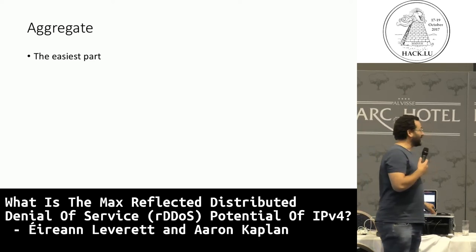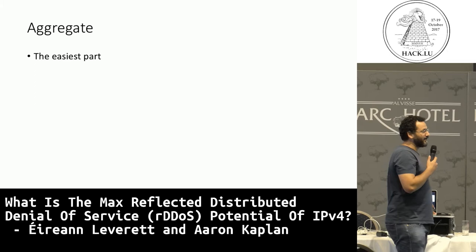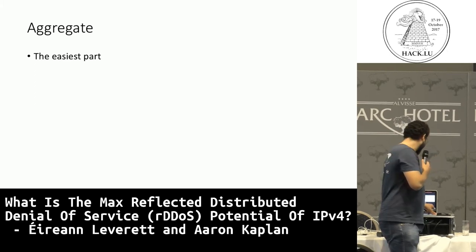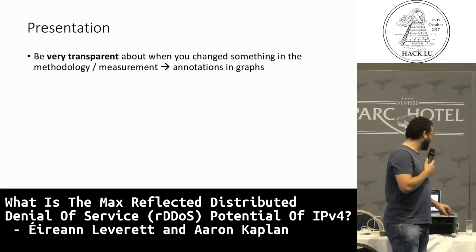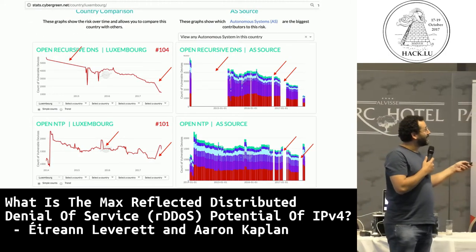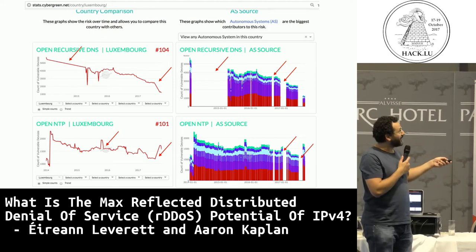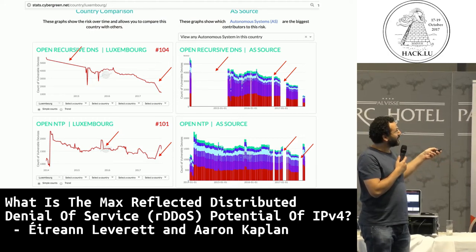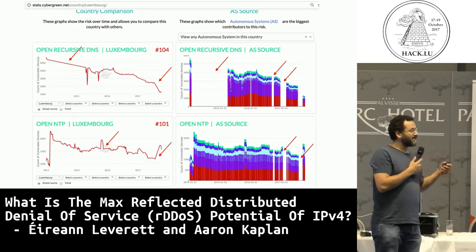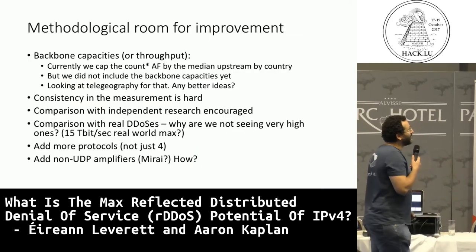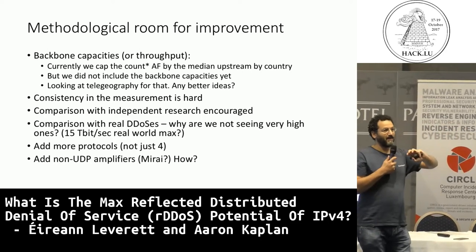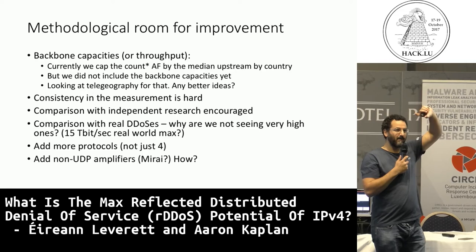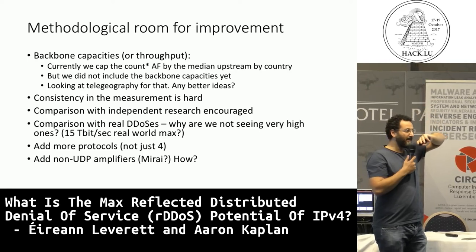Upstream bandwidth: the best data we got our hands on was MLab. Speedtest.net is used a lot but they sell their data. For the presentation layer, it's really important to point out exactly where you made omissions - for example where no data came in and got interpolated, or where there was a change in scanning methodology. Be transparent about these. What we have not yet done is check for bottlenecks in the backbone - for example between Holland and England. Maybe backbone links are not as strong as the DDoS potential, requiring another min term in the formula.